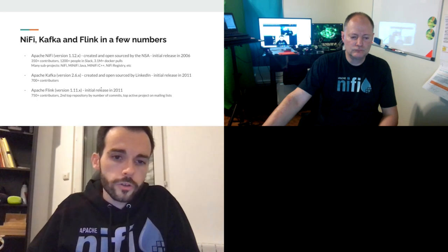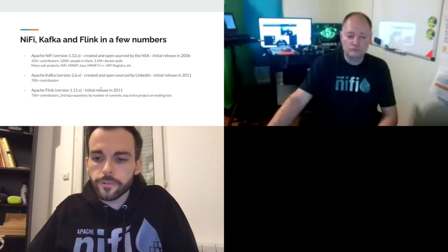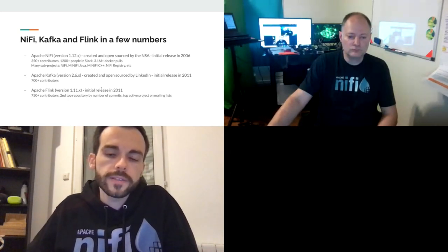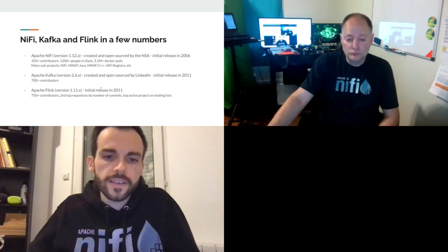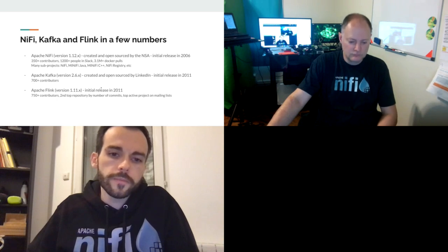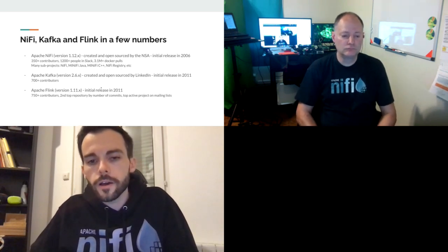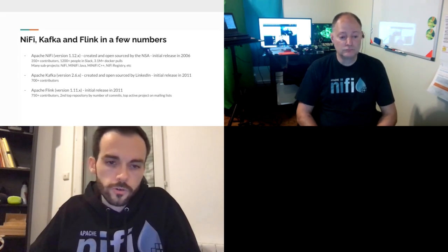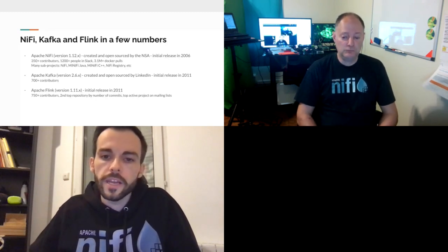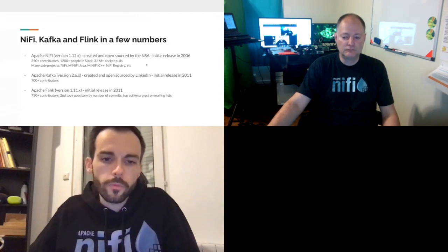Kafka is on the 2.6 release line. It was created and open-sourced by LinkedIn and has been in the ASF since 2011. Flink is on the 1.11 release line, originally a fork from a project called Stratosphere, created by a collaboration between universities in Germany. It's one of the most active projects in the Apache Software Foundation — over 700 contributors, the second repository by number of commits last year, and the most active project on the mailing list. If you're looking for a streaming engine, that's probably the one you want.